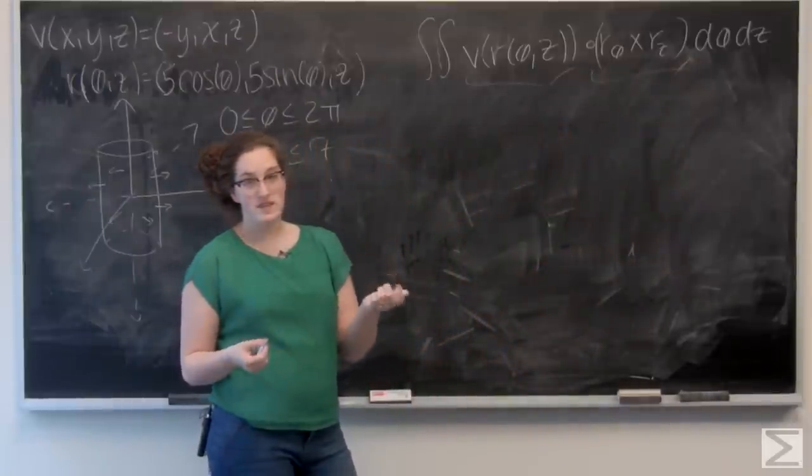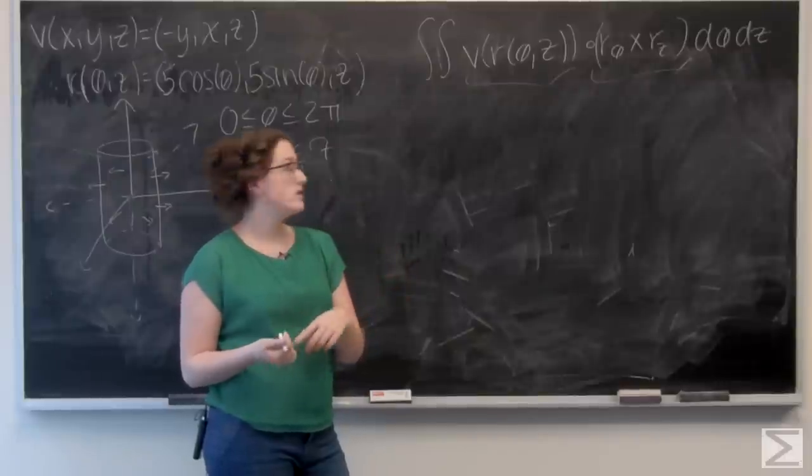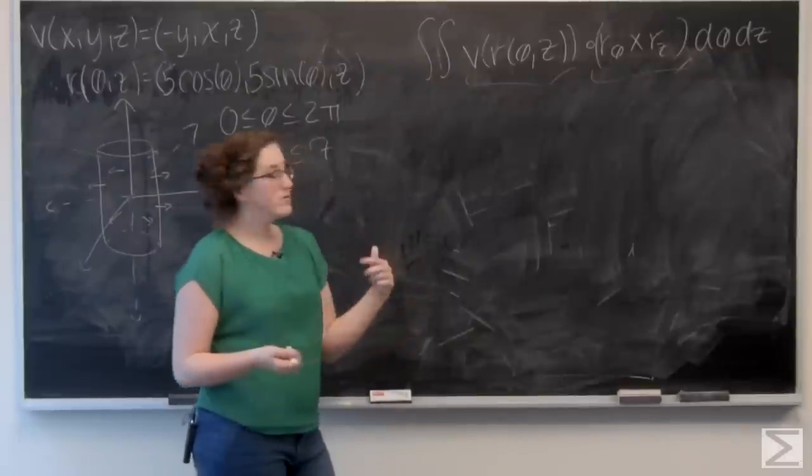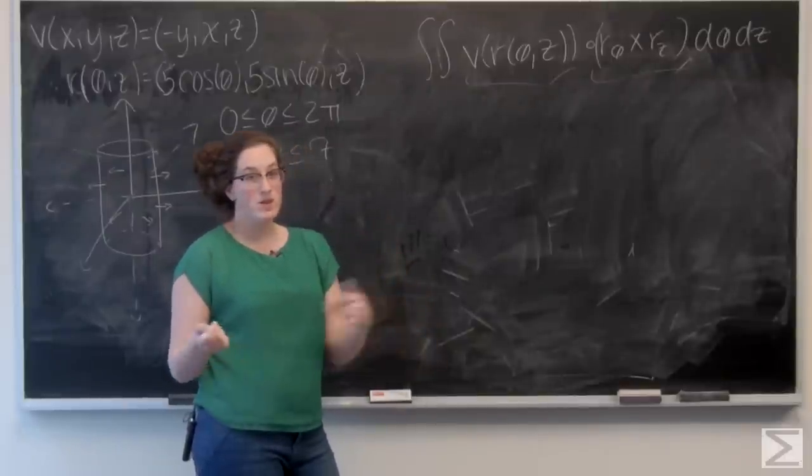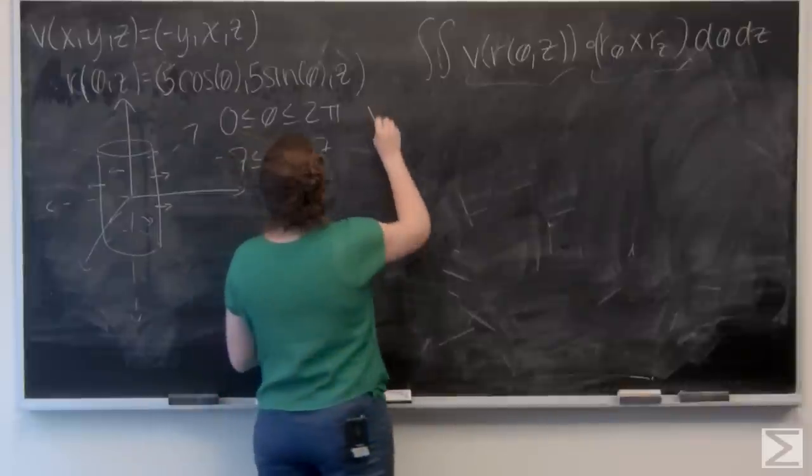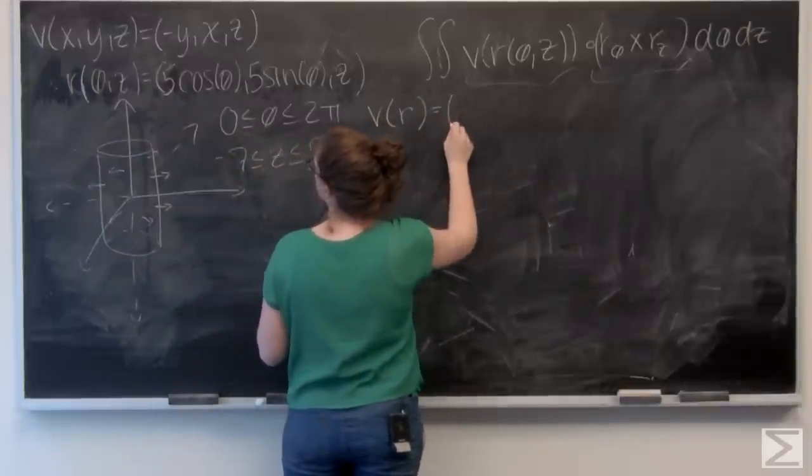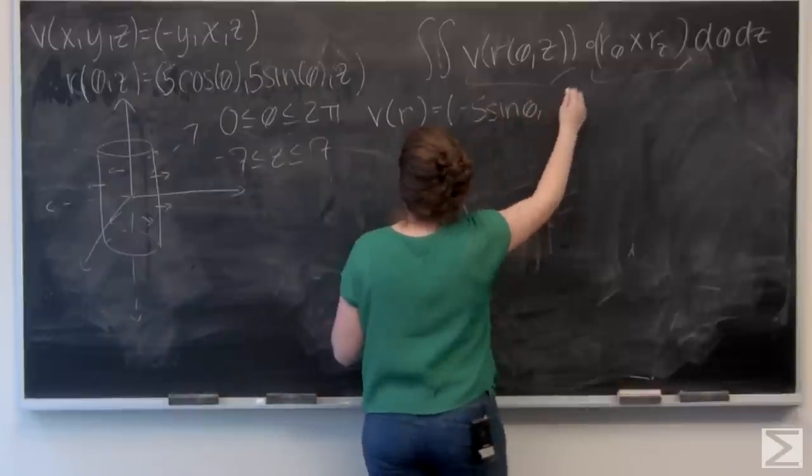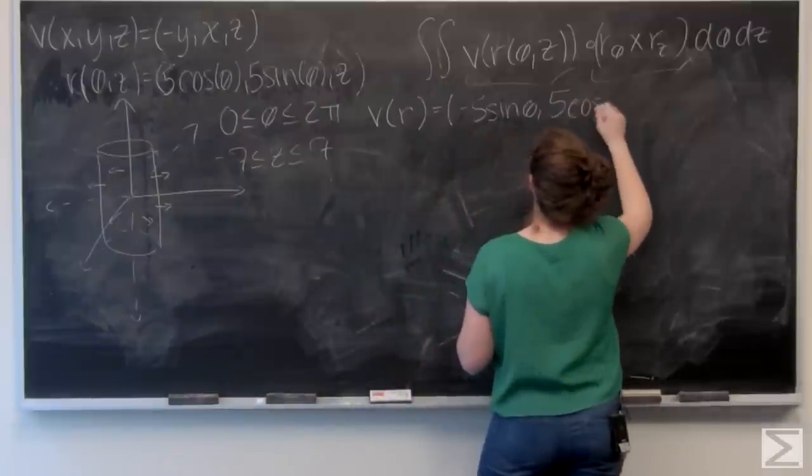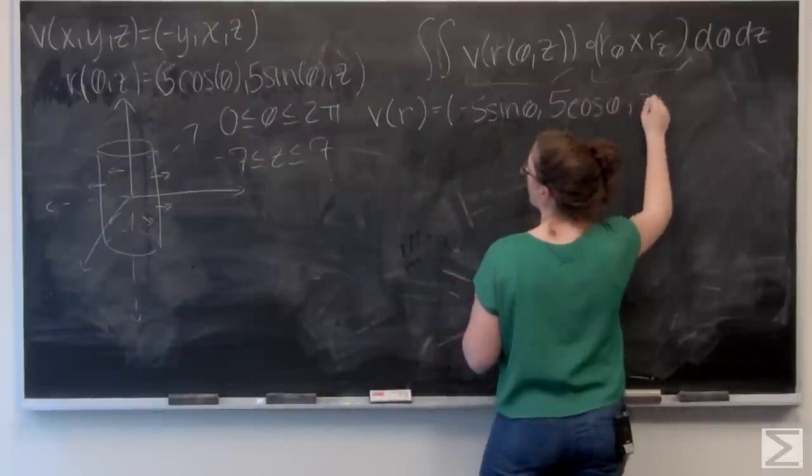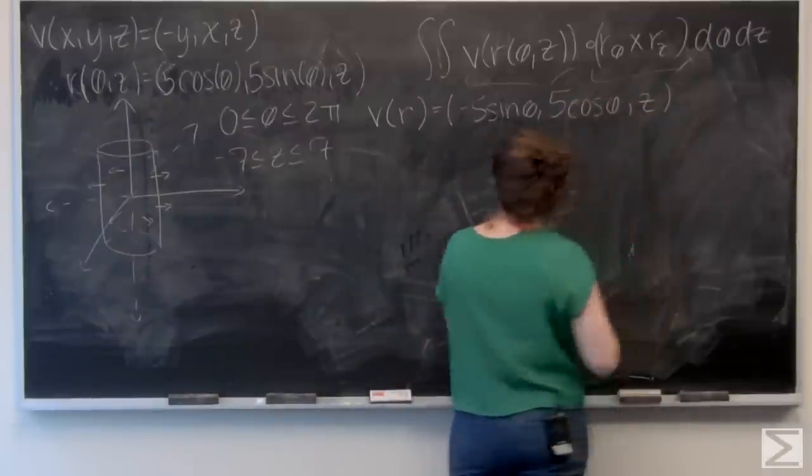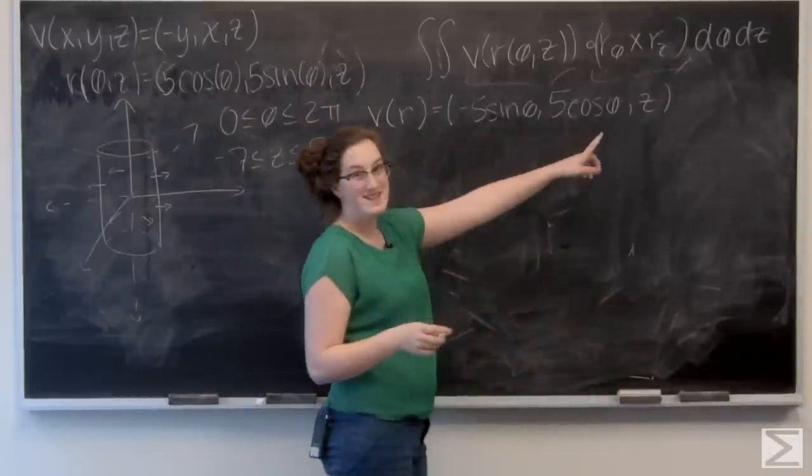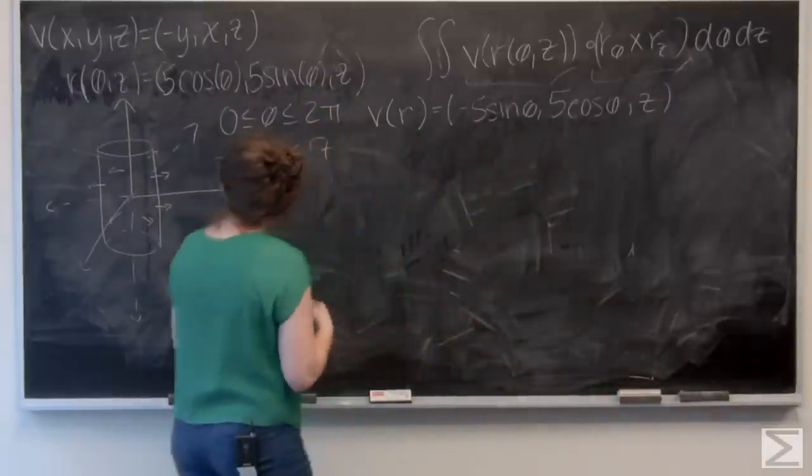Let's start with v of r. So everywhere I see an x in v, I want to plug in the i component of r. Likewise, everywhere I see a y, plug in the j component. z, plug in the k component. So I've got negative 5 sine theta, 5 cosine theta, z. So that part's all set.